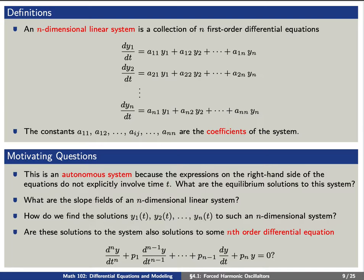Let's start with some definitions. An n-dimensional linear system is a collection of n first order differential equations. They will be in the form dy1/dt equals a11*y1 plus a12*y2 plus and so forth a1n*yn. These constants a11, a12, and more generally aij are called coefficients of the system.